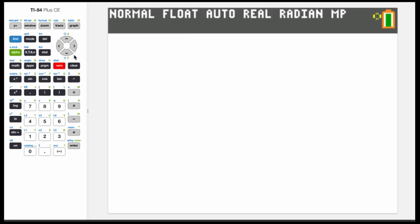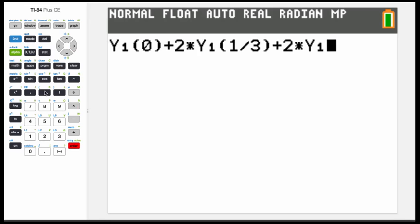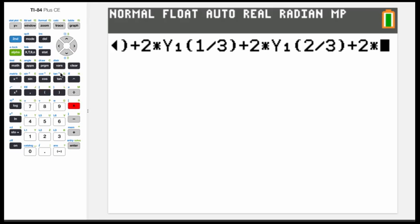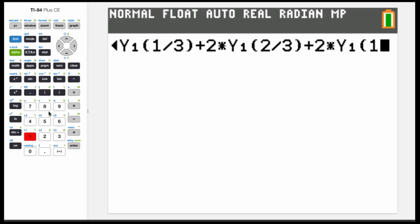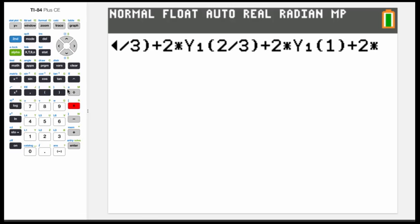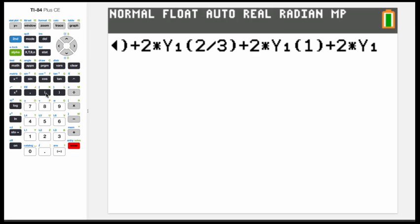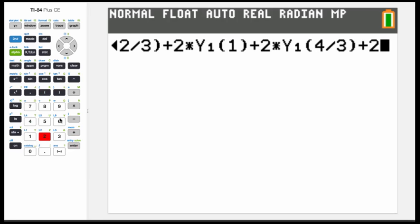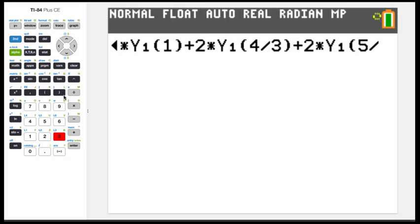We have two times the function value at one third plus two times the function value at two thirds, continuing this pattern through the remaining intervals.